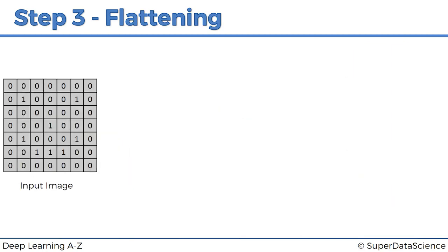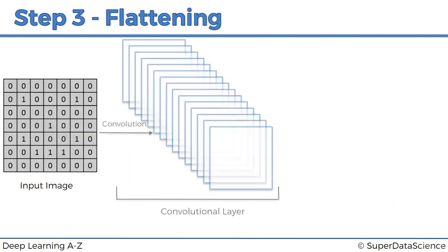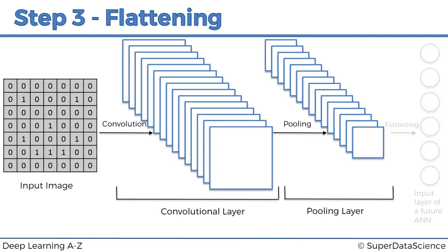And so to sum all of this up: we've got an input image, we apply a convolution layer and let's not forget the ReLU or rectified linear units function that we apply after the convolution layer as well. Then we apply pooling, and then we flatten everything into a long vector which will be our input layer for an artificial neural network.